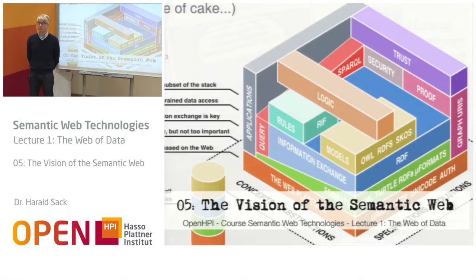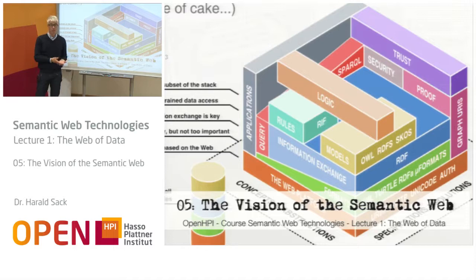In the last part of the lecture, we talked about the problems that arise because of the lack of semantic information within the web. Now we want to take a look at how the semantic web can help in this situation. First, we have to think about what the semantic web means.